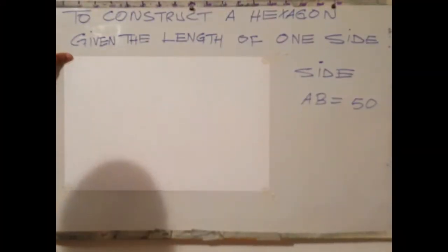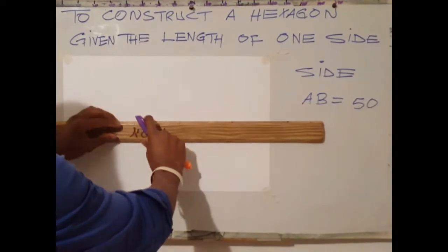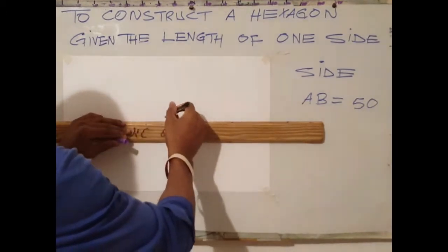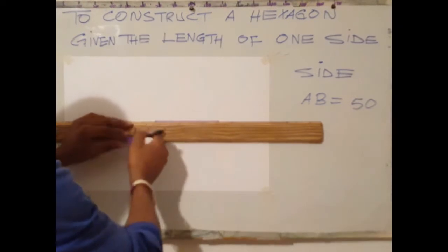Method number two to construct a hexagon. First step is to draw a horizontal line, random length.